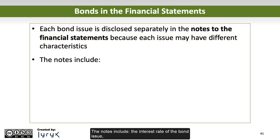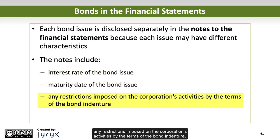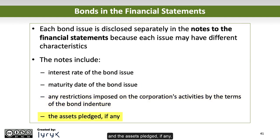The notes include the interest rate of the bond issue, the maturity date of the bond issue, any restrictions imposed on the corporation's activities by the terms of the bond indenture, and the assets pledged, if any.